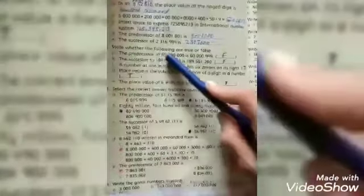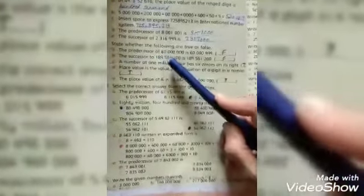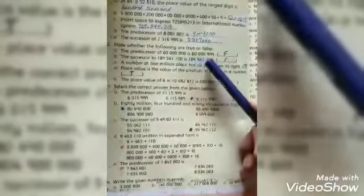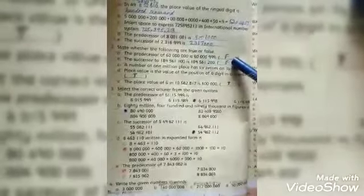Question number 2 is state whether the following are true or false. A, the predecessor of 600000 is 600000. No, it's not the predecessor of this, so this is the false statement.